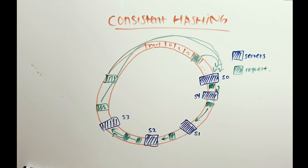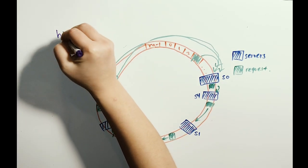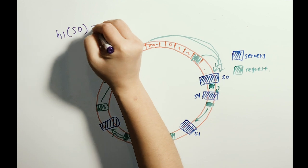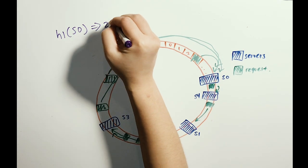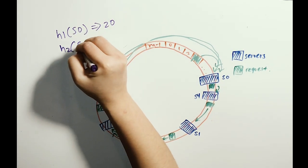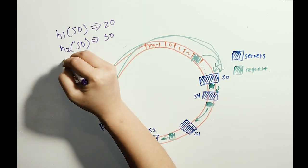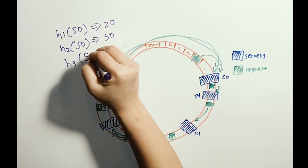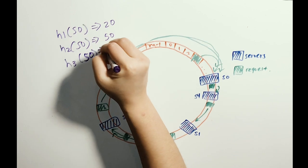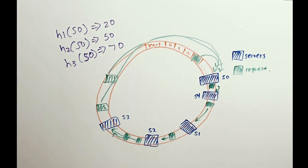In order to ensure a more evenly distributed load, we can introduce the idea of virtual nodes. Remember that there are many different kinds of hashing functions. Each server is hashed with different hashing functions. The inputted server ID is the same, but the outputs are slightly different. This means that server S0 can be hashed with different functions, and the outputs will be from hash 1, 20, from hash 2, 50, and from hash 3, 70.